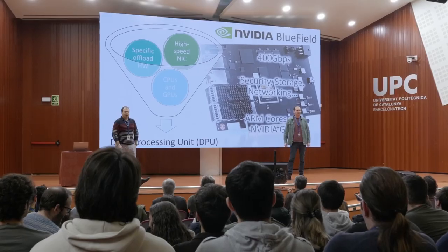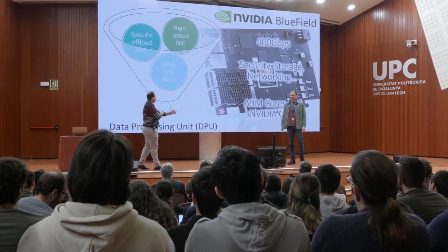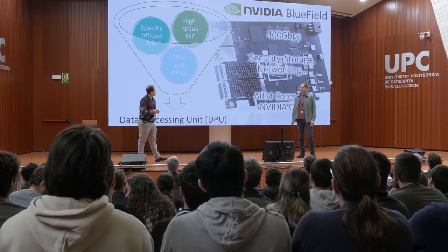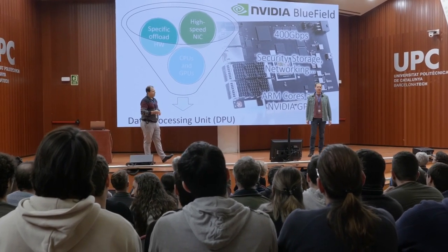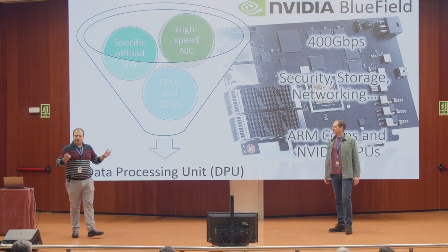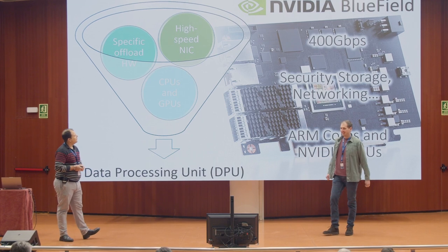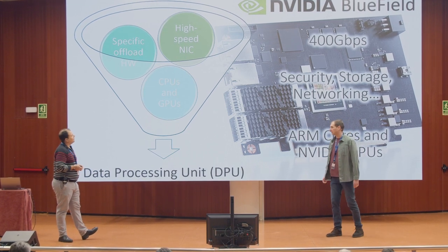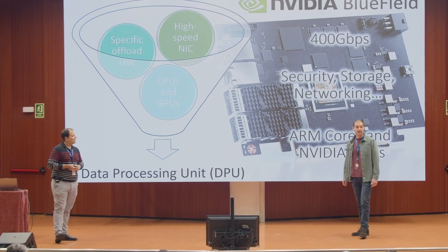Actually, they are network cards which have some small general-purpose cores next to them that are used for diverse minor tasks. And they have been successfully used in places like Cloud. Definitely, they are awesome. And now it's the moment to use them in HPC.